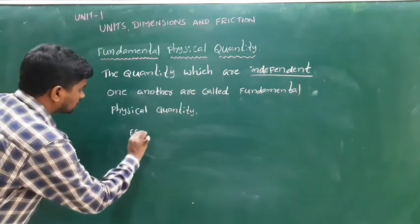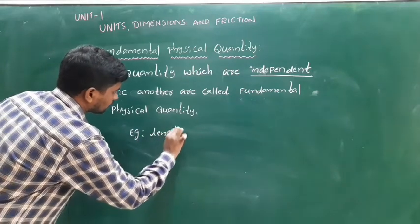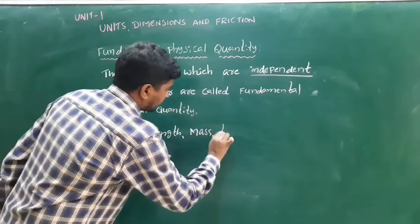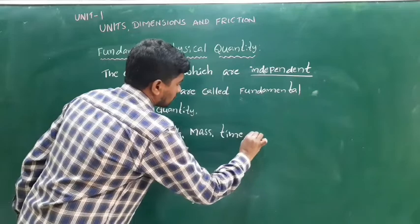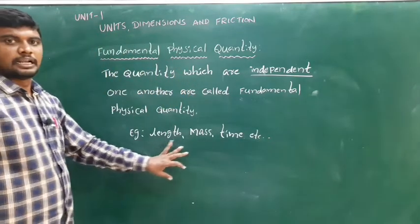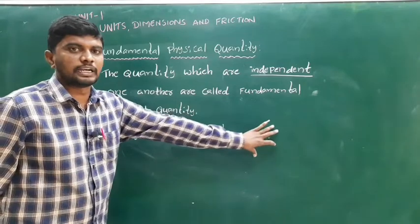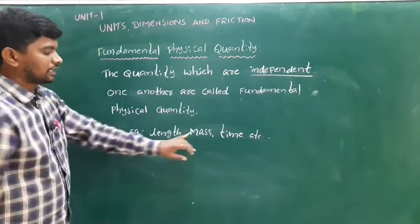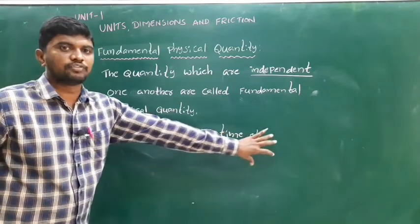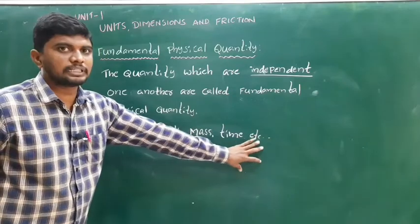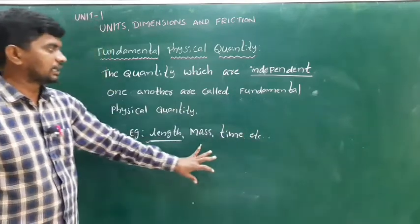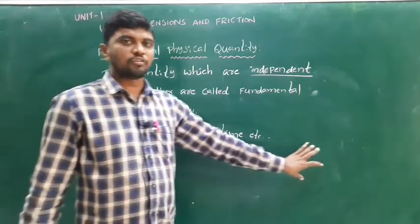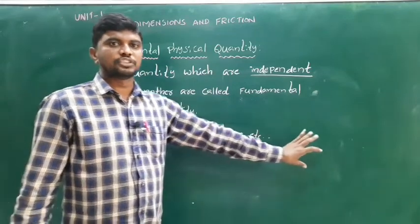Examples of fundamental physical quantities: length, mass, and time. Length is a fundamental physical quantity — it does not depend on any other physical quantity. Mass is a fundamental physical quantity — it does not depend on any other quantity. Time is also a fundamental physical quantity.